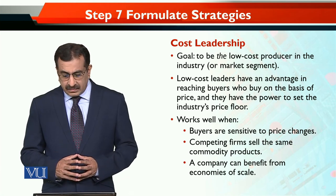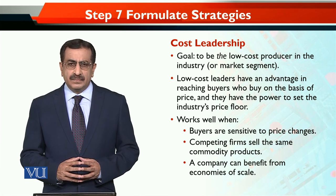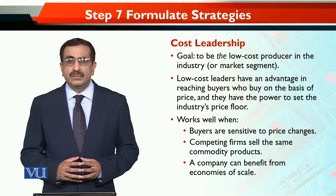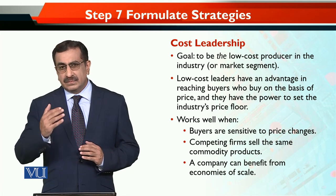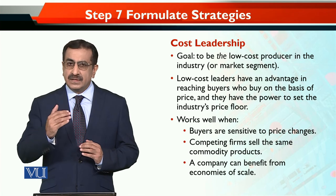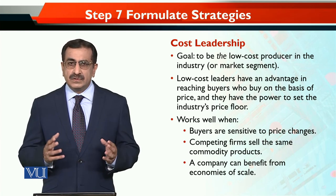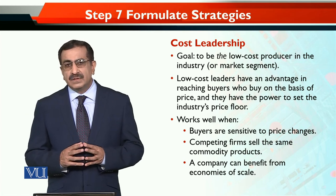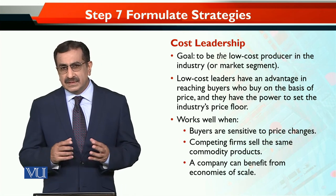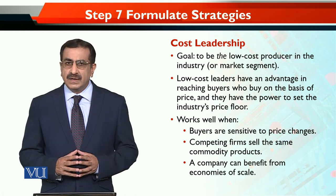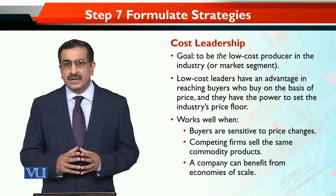جب competing firms بالکل یہی product بیچ رہی ہوں تو a company can benefit from economies of scale۔ Economies of scale یعنی جب آپ اپنا scale change کر لیتے ہیں اور production quantity بڑھ جاتی ہے تو آپ کو فائدہ ملتا ہے جس کی وجہ سے آپ اپنی cost کم کر پاتے ہیں۔ مثلاً ہزار سے دس ہزار یونٹس بنانے لگیں تو average fixed cost reduce ہو جاتی ہے، average per unit cost بھی کم ہو جاتی ہے اور آپ market میں cost leader بن کر سب سے کم قیمت پہ product offer کر سکتے ہیں۔